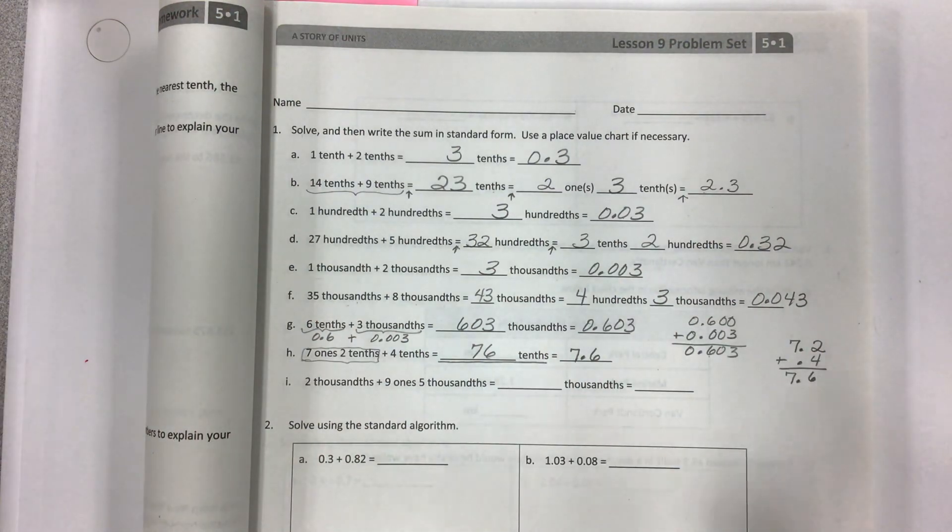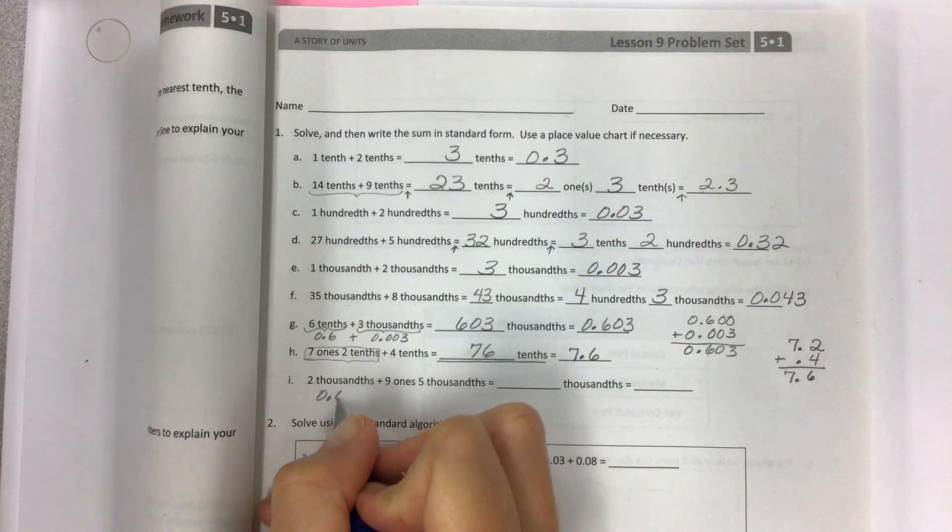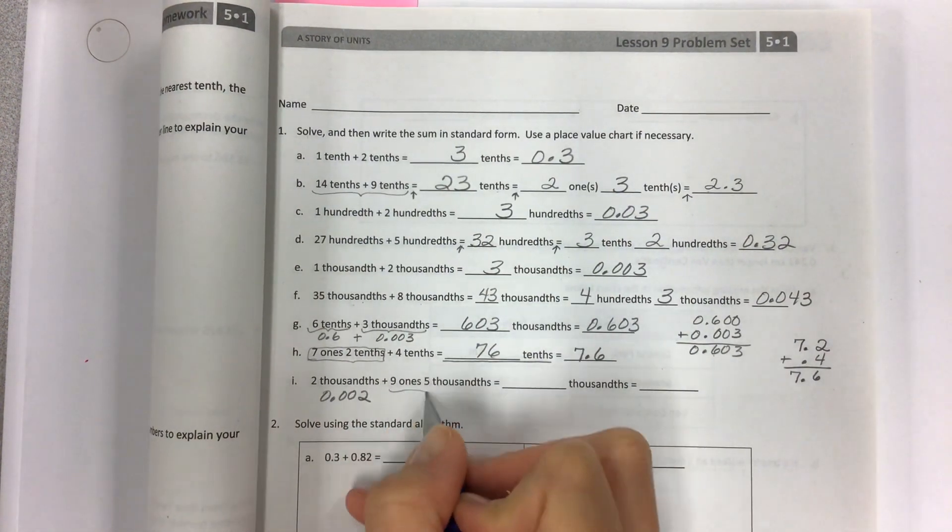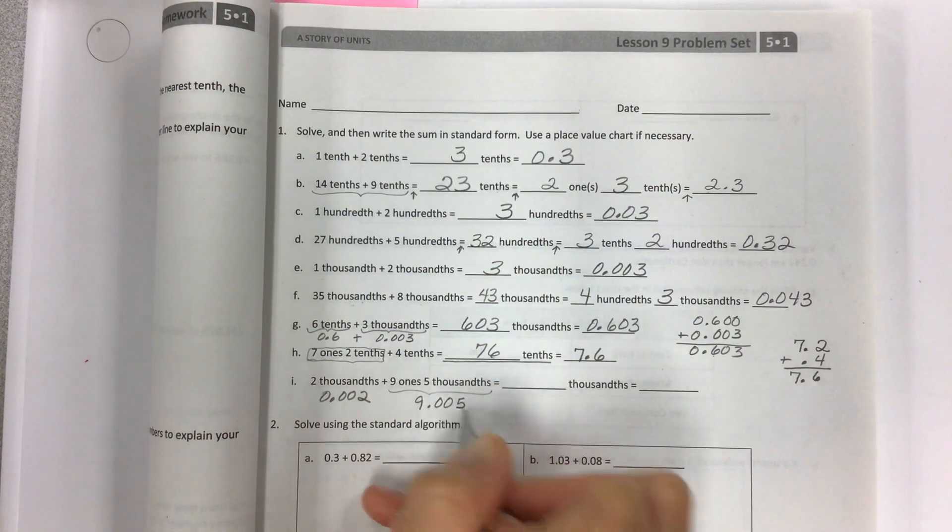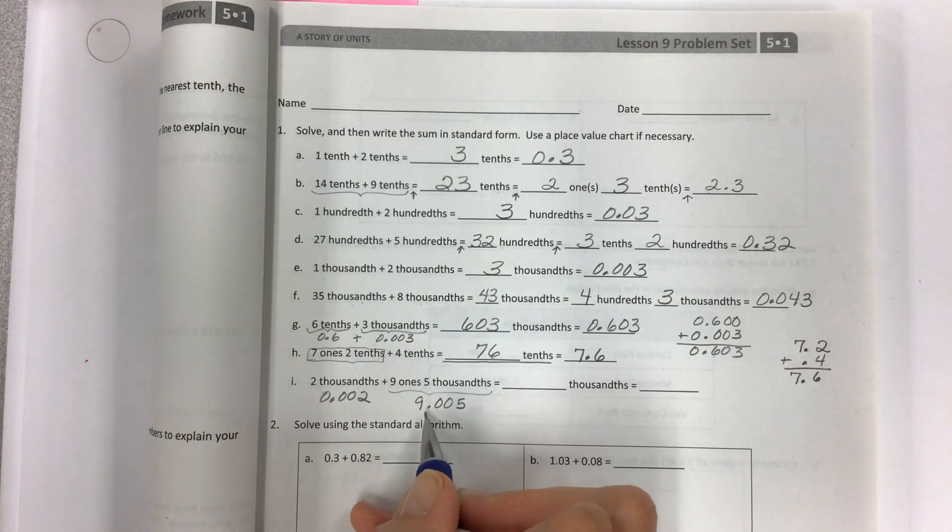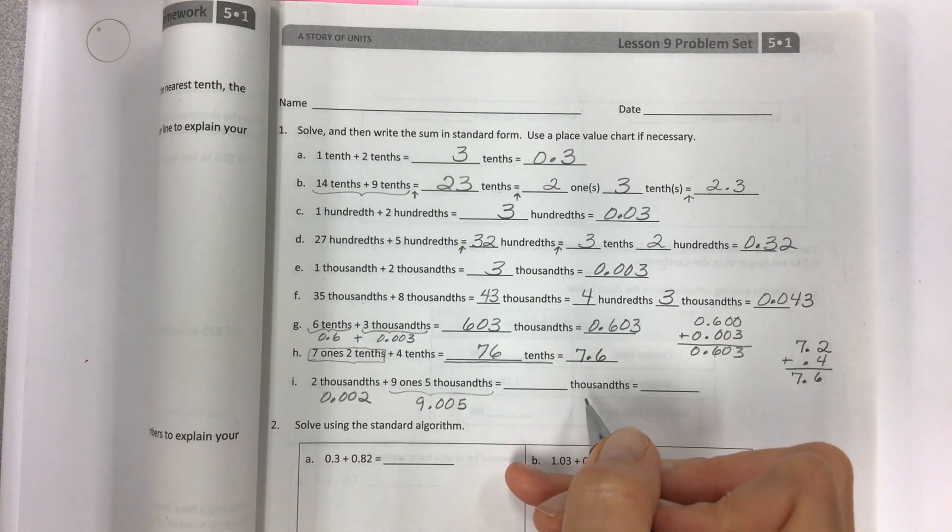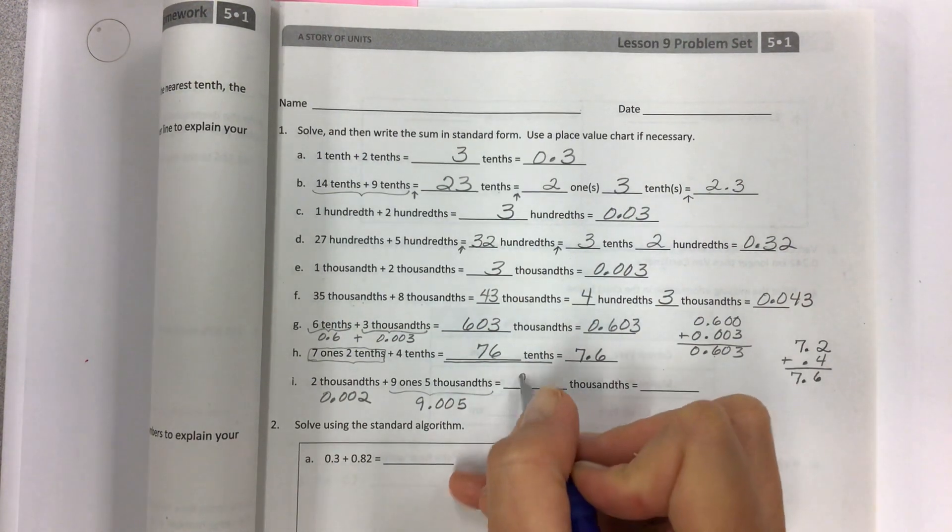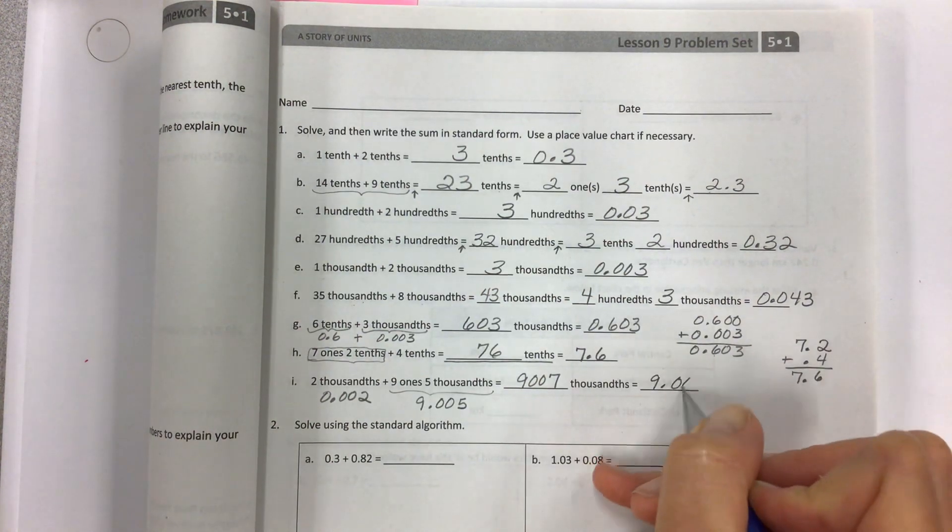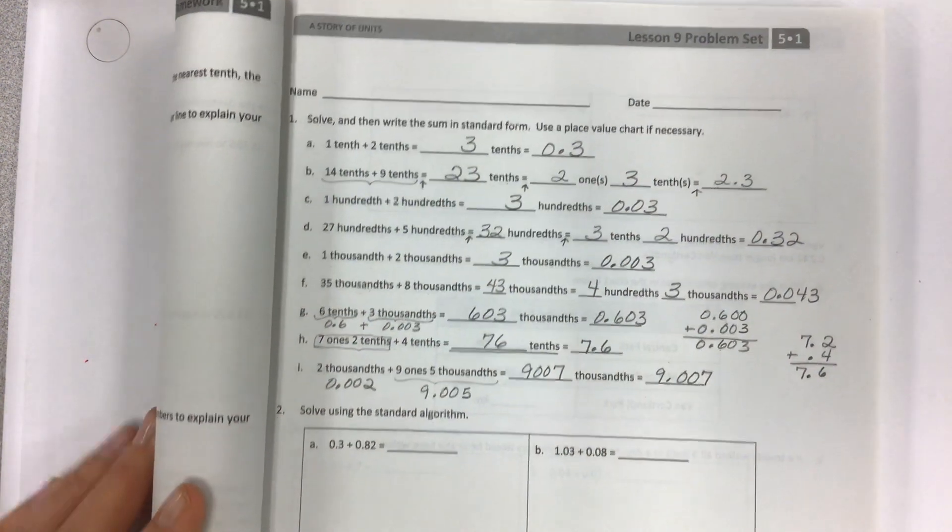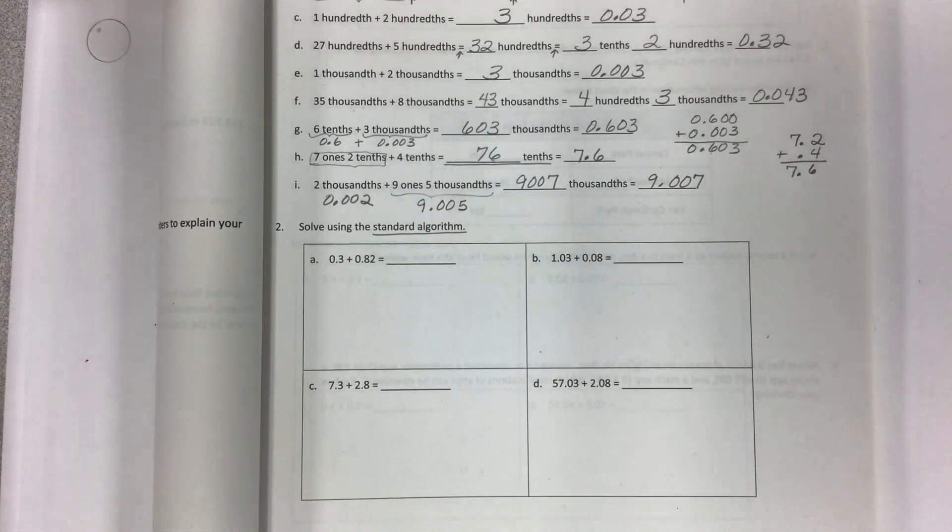I'll just toss this one out for you: 2 thousandths plus, watch out for this big long number, 9 ones and 5 thousandths. Remember don't say 'and'—9 ones and 5 thousandths. Don't put 'and' anywhere else unless there's a decimal. This would give you 9,007 thousandths, which is 9.007. All this is to prepare you for the standard algorithm, which you're going to go 'huzzah, that's our favorite thing.'